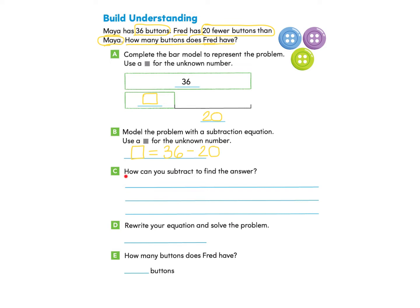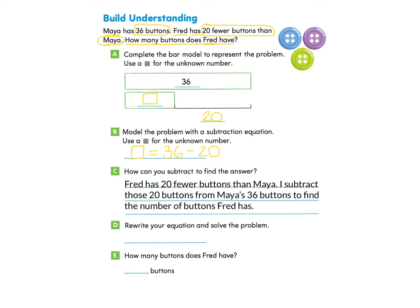Let's look at Part C: How can you subtract to find the answer? I can explain my thinking by stating that Fred has 20 fewer buttons than Maya. I subtract those 20 buttons from Maya's 36 buttons to find the number of buttons. You may want to pause to write down your thinking.